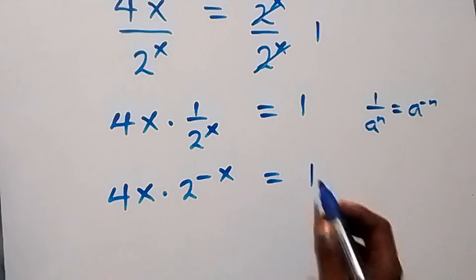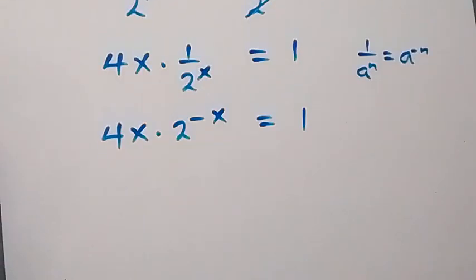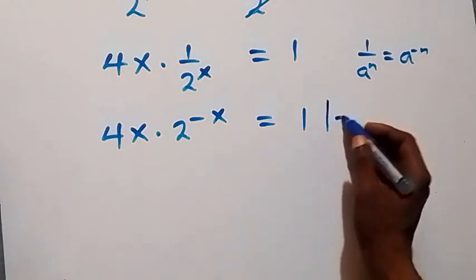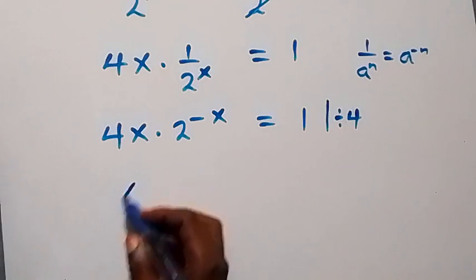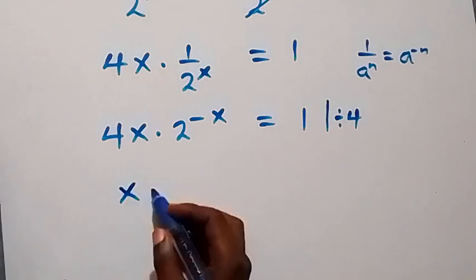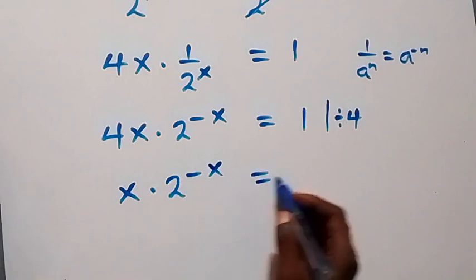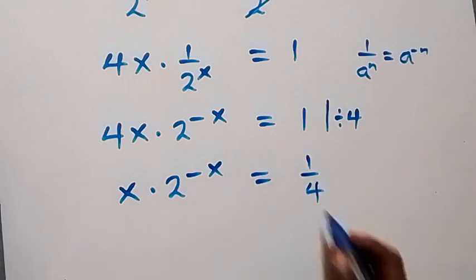On this side, from what we have here, we can divide both sides by 4. Divide through by 4 — the 4 cancels out — and we have x times 2 raised to power minus x now equals to 1 over 4 on this side.